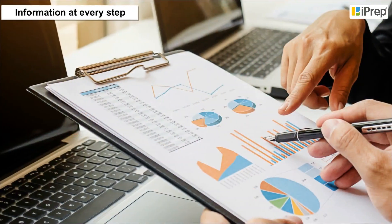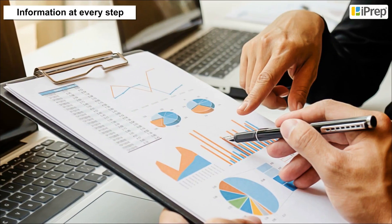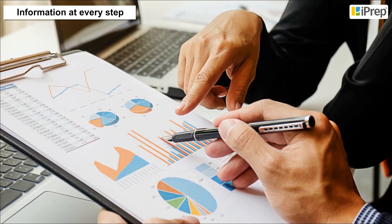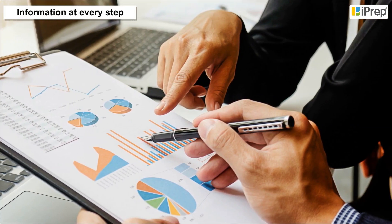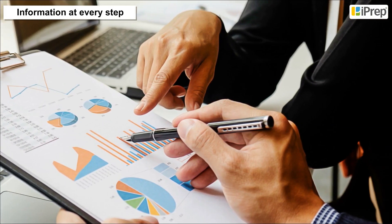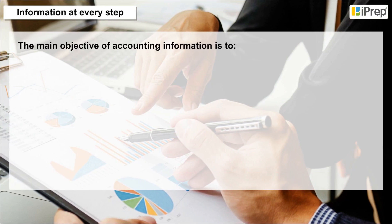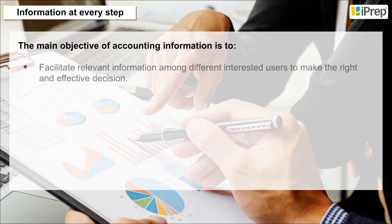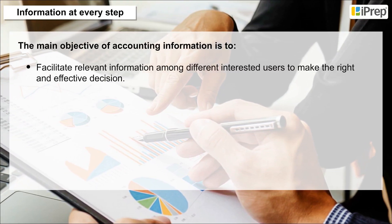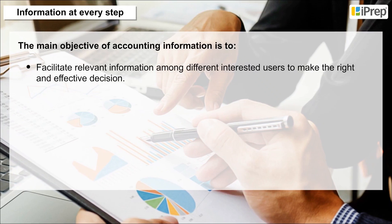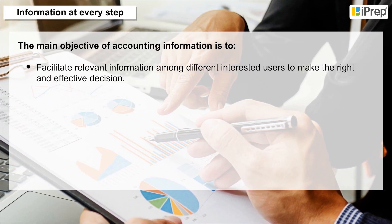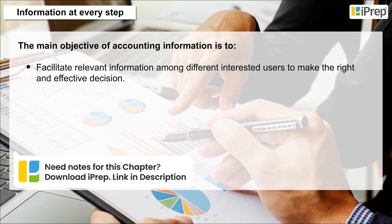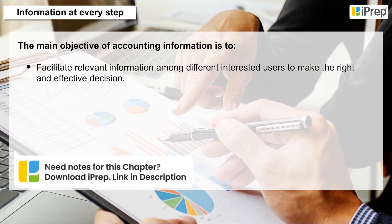Information at every step. Accounting process generates information at every step. The main objective of accounting information is to facilitate relevant information among different interested users to make the right and effective decision.